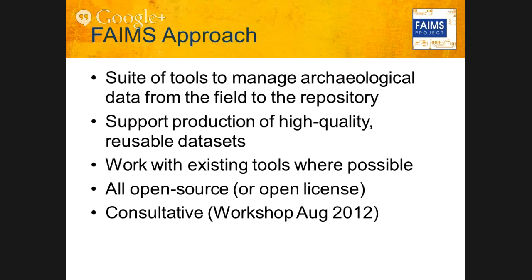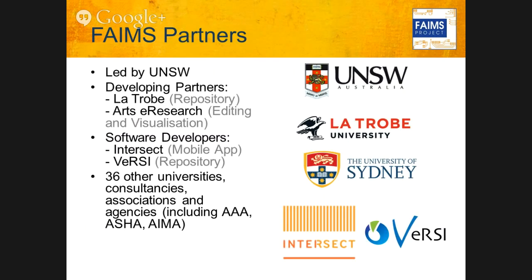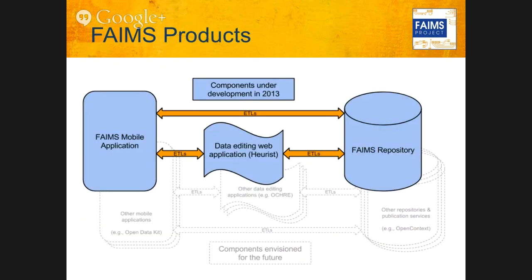FAIMS committed to working with existing tools wherever they existed, which caused both headaches and joy. Everything is open source and the whole project was built on a very consultative model, launching with a big workshop in August 2012 and having over 40 organisations supporting it. Key components developed over 18 months include a mobile application, editing capacity with Heurist, and a repository built on TDAR and AHAT.